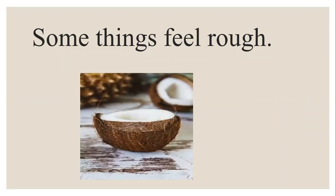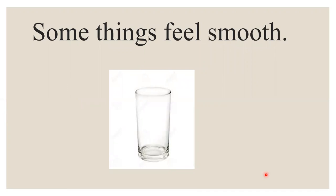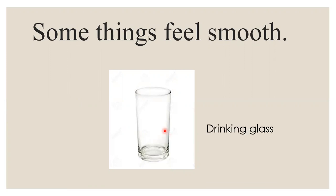Some things feel rough. Look at this picture — this is a coconut. But not all parts of the coconut are rough. The coconut shell, that is the outer part, is rough. Some things feel smooth. This is a drinking glass. A drinking glass feels smooth. If you rub your hands against it, you will notice it's very smooth.